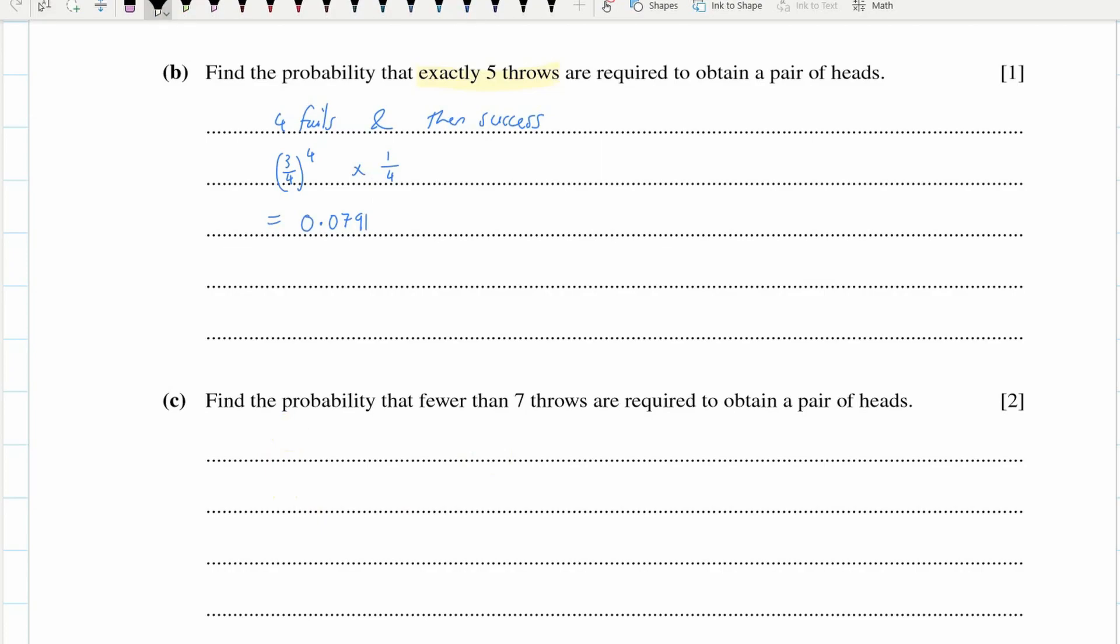The next one, fewer than seven throws. Okay, so seven throws would be six fails. So fewer than seven throws would be one, take away the chance of six fails. So then fewer than that would be one, all of the probabilities take away the probabilities of seven or more throws. So that gives us 0.822.